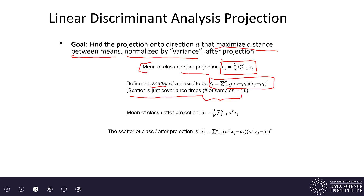We can compute the mean of each class after projection. The mean of class i after projection — denoted with a tilde — is the sum of projected points x_j divided by n. Similarly, the scatter after projection, written with a tilde on top, uses the same scatter formula but with each term projected. These are mean and scatter before projection, and mean and scatter after projection.